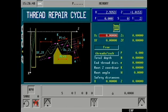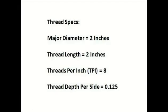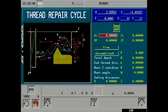To begin entering data to our cycle screen, let's look at our sample thread specifications. Our major diameter is 2 inches. Our thread length is also 2 inches. Our threads per inch, also known as TPI, is 8. Our thread depth per side is 0.125, or one eighth of an inch.